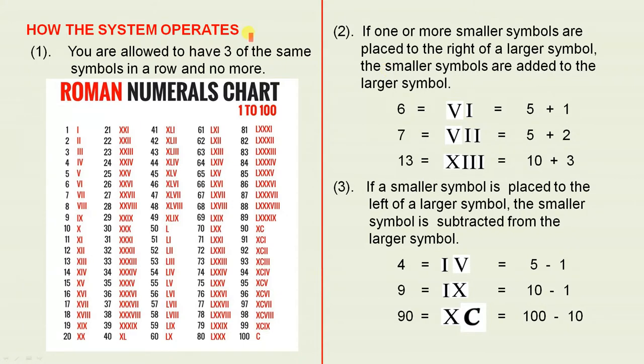So how the system operates. You are allowed to have three of the same symbols in a row and no more. For example, see the three? You have three symbols there. See that? Nowhere, wherever you look, anywhere you look, doesn't matter what the symbol is, you will not see four symbols in a row. You only see three. So that's a very important rule to remember.